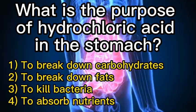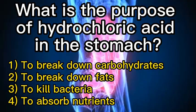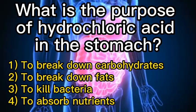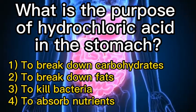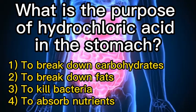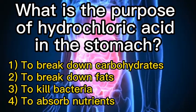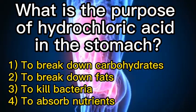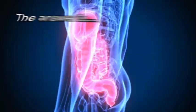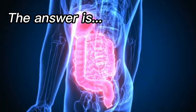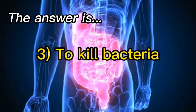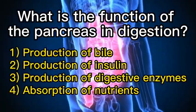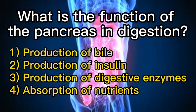What is the purpose of hydrochloric acid in the stomach? One: to break down carbohydrates. Two: to break down fats. Three: to kill bacteria. Four: to absorb nutrients. The answer is three, to kill bacteria.